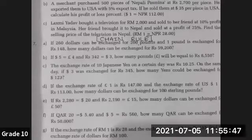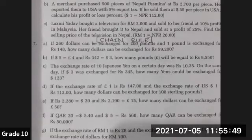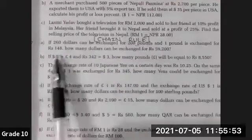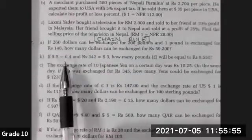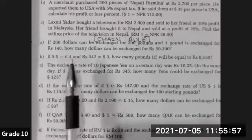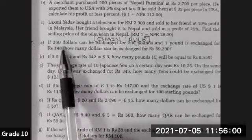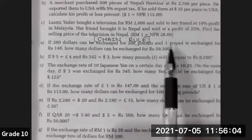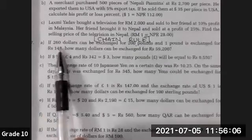While doing questions related to chain rule, first we have to identify what are the different types of currencies used in the question. Let me read the question: if 260 dollars can be exchanged for 200 pounds, and one pound is exchanged for rupees 148.